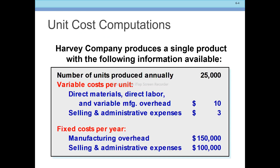In this example, a hardware company produces a single product with the following information available. We have the number of units produced annually, and we have direct material, direct labor, and variable manufacturing overhead per unit.